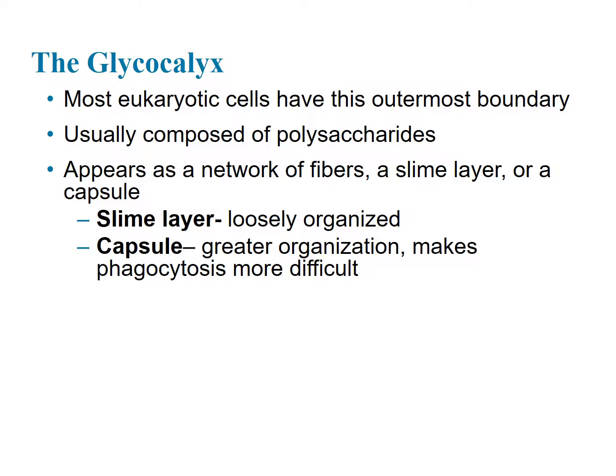All eukaryotic cells have a plasma membrane, but if they have something outside — some protective layer — it's going to fall into two camps, just like with prokaryotes: a slime layer and a capsule. The slime layer is a loose assembly of sugars and proteins that are very hygroscopic, meaning they pull in and hold water so the cell doesn't dry out as easily.